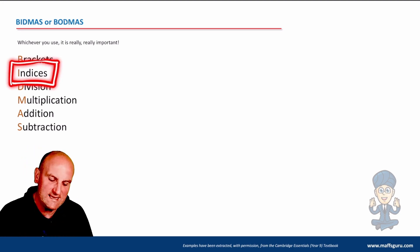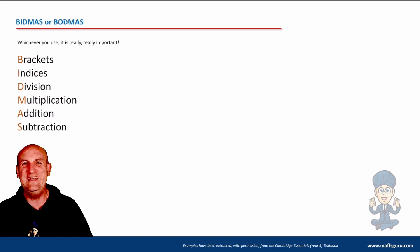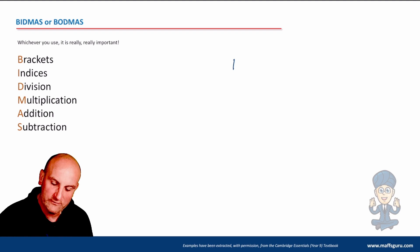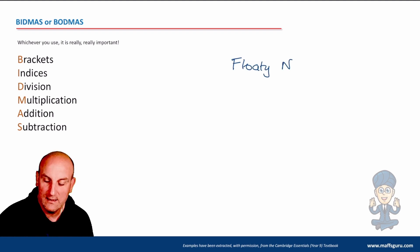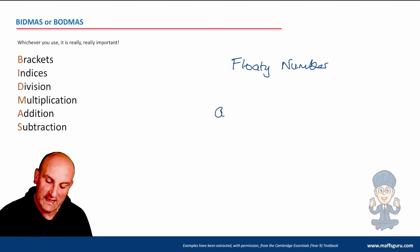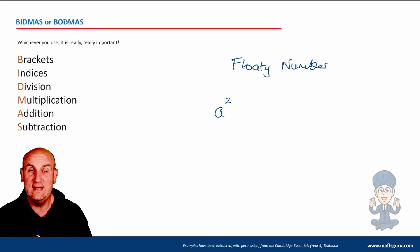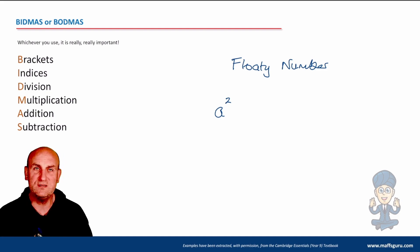Why BIDMAS? Because I is for indices. An index is a floaty number - a number that floats. So if I have an A with a floaty two, that's A squared. Otherwise known as a power, an index, or an exponent.